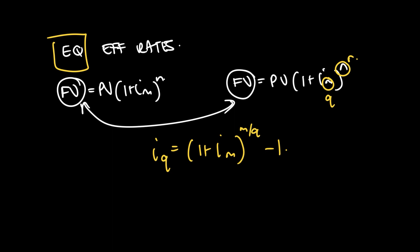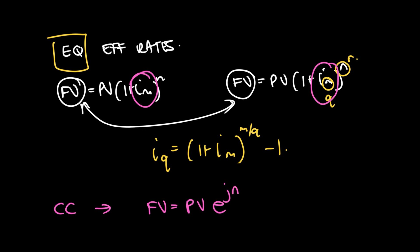That formula was assuming both effective interest rates had compounding periods — so it wasn't continuous. Now we're going to look at creating a new formula to account for continuous compounding, where we use the future value equal to the present value times e to the JN. So let's go ahead and do that.